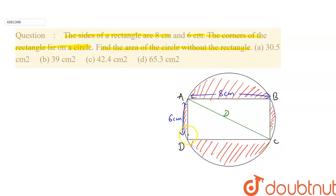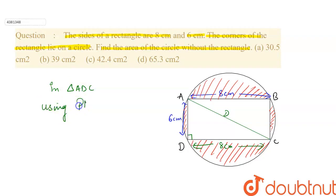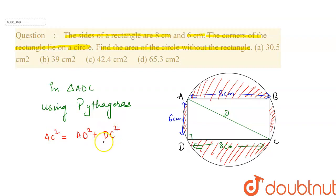If we talk about triangle ADC, we have a right angle triangle in which AC is the diameter and also the hypotenuse. The base DC is equal to 8 cm. So if we apply Pythagoras in triangle ADC, we can write: AC² = AD² + DC².